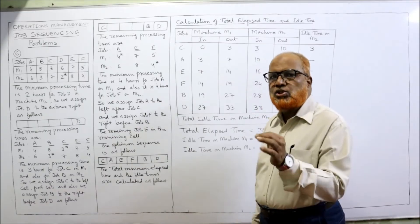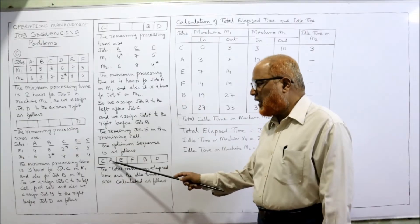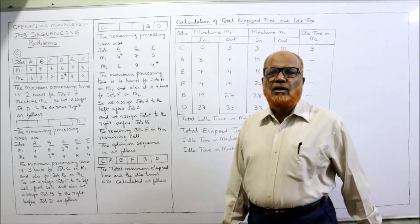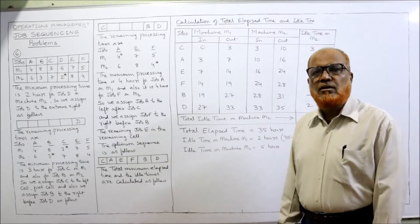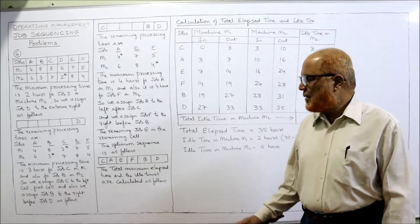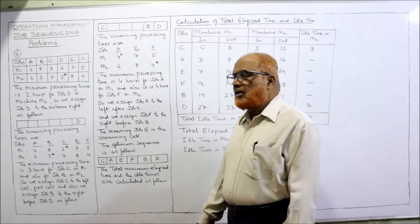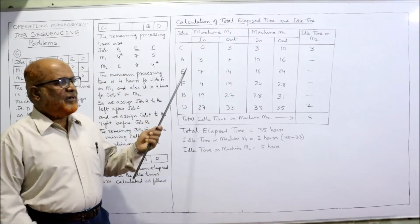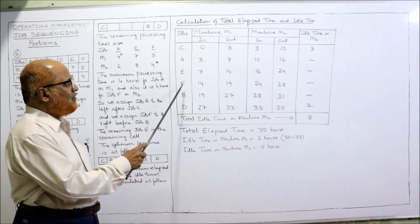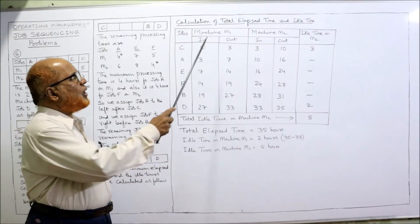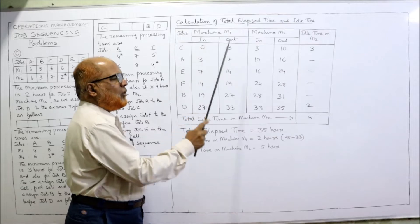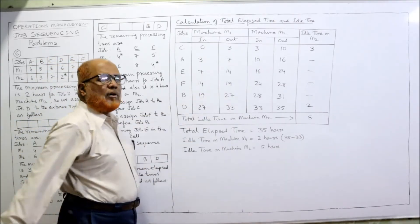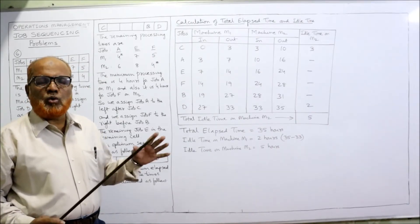We got the optimum sequence: C, A, E, F, B, D. We should start with C, then A, then E, F, B, D. If we follow this sequence the total elapsed time will be minimum; any other sequence will give a higher elapsed time. Now we need to find the total elapsed time and idle time for each machine. We take the sequence C, A, E, F, B, D as our job column. Two columns for machine M1 and M2, each with sub-columns 'in' and 'out' — when the job starts and when it finishes.